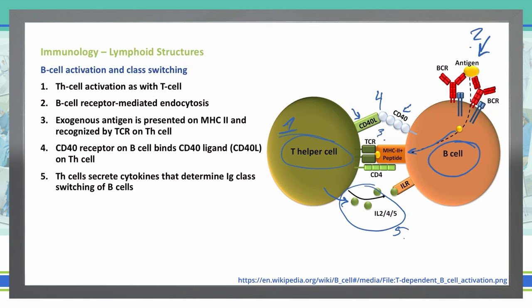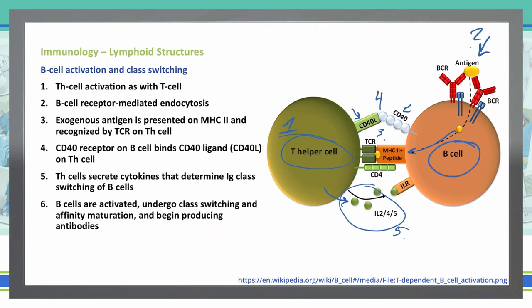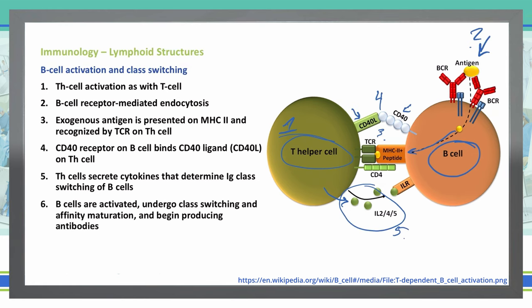The final step — step six — for class switching of B cells is activating the B cells, undergoing class switching and affinity maturation, and beginning to produce antibodies. So all of this moves forward to produce those antibodies. We just talked about how antibodies are created via class switching using T helper cells and B cells.